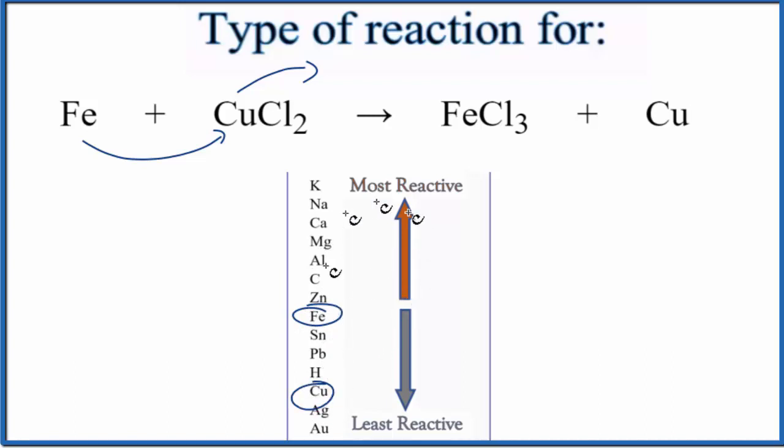So as we look at the activity series, the higher up an element is, the more reactive. So since iron is more reactive than copper, iron can come in, push the copper out, and then bond to the chlorine. That gives us the iron chloride.